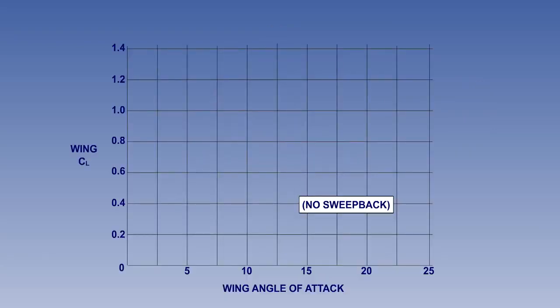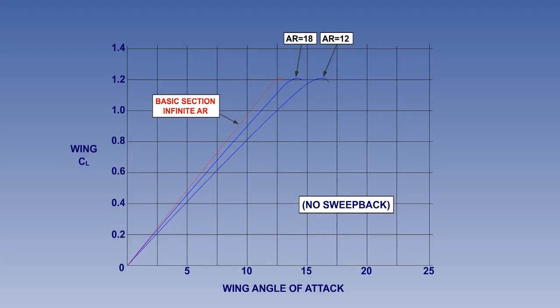We can examine the effect of aspect ratio by looking at the lift curves for various configurations. The starting point is a wing of a typical section, but of infinite aspect ratio, obviously a purely theoretical situation. But if the wing is given an AR of 18, it can be seen that reduction in AR increases the angle of attack necessary to produce a given lift coefficient. Further reduction in AR, shorter wings, will continue to increase the angle of attack required for CL max. Higher aspect ratio wings are more sensitive to changes in angle of attack, but require a smaller angle of attack for maximum lift.